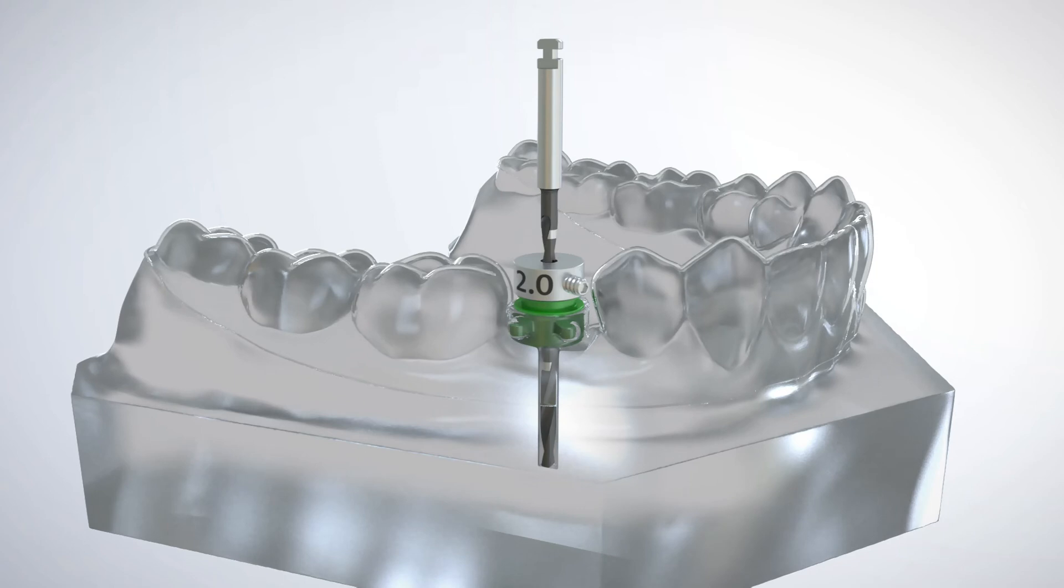The initial pilot drill with a GRS drill sleeve loosely attached is inserted through the drill sleeve to the full depth of the hole in the printed model. The GRS drill stop is secured to the drill with the drill stop driver.